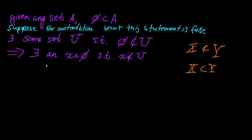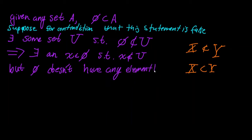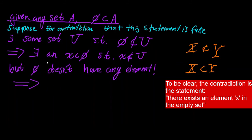But look at this: the empty set doesn't have any elements — it's empty. Thus, there cannot possibly exist an x in the empty set such that x is not in U. So if we suppose this statement is false, we arrive at a contradiction: we said there exists an x in the empty set, but this is a contradiction because the empty set has no elements.